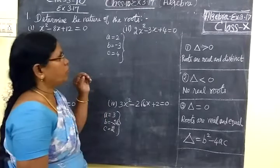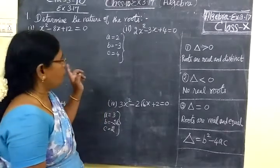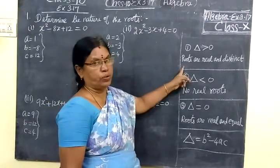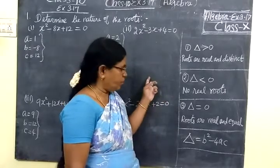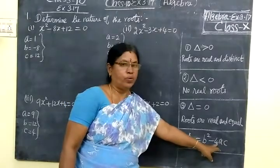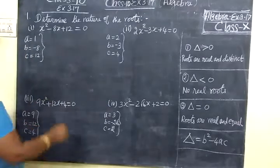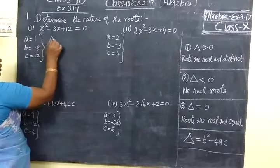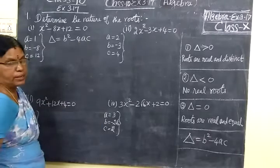Good evening students. Now we are going to see exercise 3.17. Before that, in the last class we achieved how we are finding the nature of the roots of quadratic equations. For that, you are using the discriminant b² - 4ac. We are doing all these problems. I have already written the a, b, c values. So you are placing the discriminant Δ = b² - 4ac.